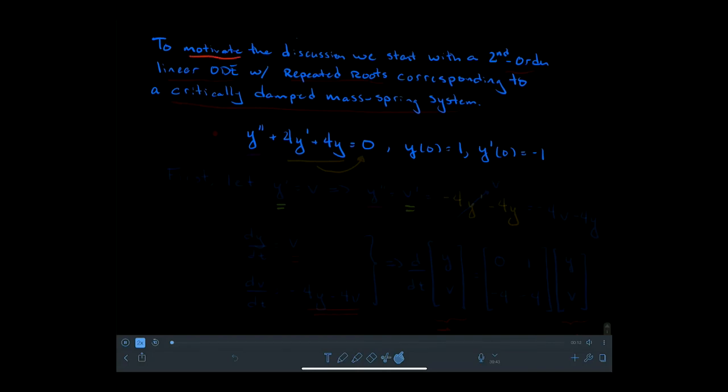To motivate this discussion, we're going to look at a second-order linear ODE with repeated roots, which corresponds to a critically damped mass-spring system. This is the ODE that we're going to look at.